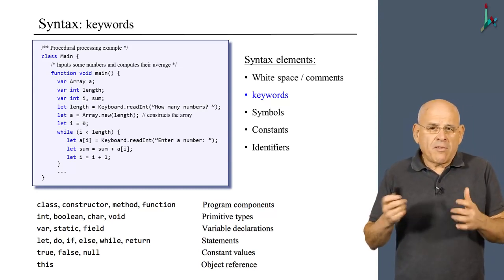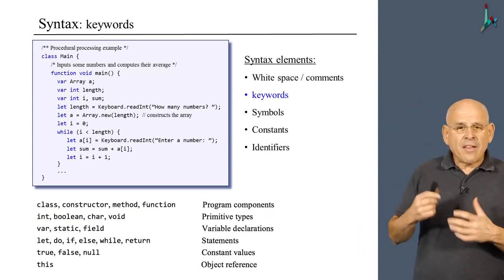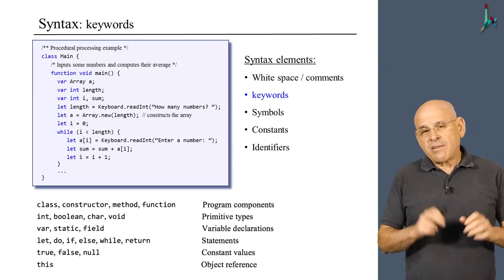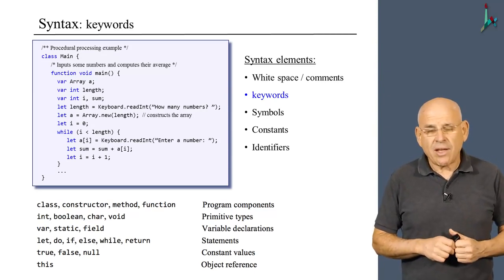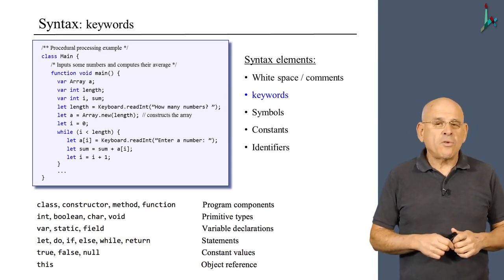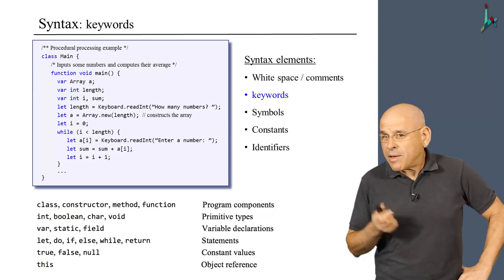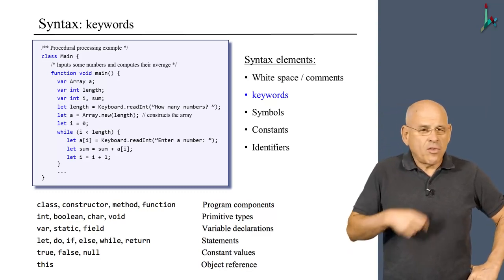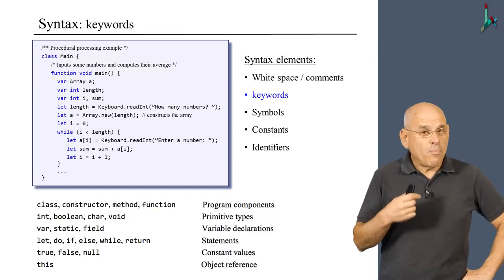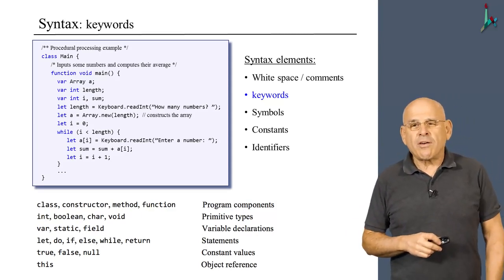Some of the keywords of Jack are standard, like while, class, function, void. Other keywords are non-standard, like var, let, and do. The non-standard keywords were introduced to the language intentionally in order to make the writing of the compiler easier, as you will see in the next module of the course. When you write programs in Jack, you may be a little bit tired to use these keywords let and do, although you get used to it very quickly. Yet when you write the compiler of the Jack language, you will be grateful that we have these peculiar prefixes.